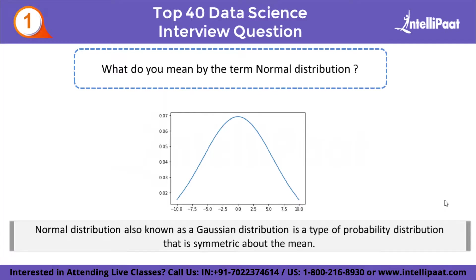What do you mean by the term normal distribution? Normal distribution, also known as Gaussian distribution, is a type of probability distribution that is symmetric about the mean. Here, mean, median, and mode are equal. Normal distribution appears as a bell curve in graphical form. As you can see in this graph, the distribution is symmetric and mean, median, and mode are equal.